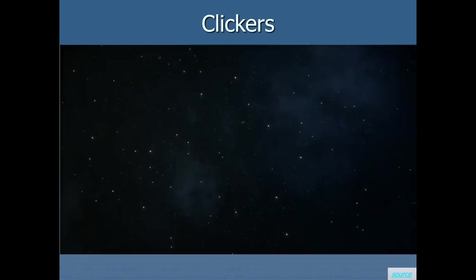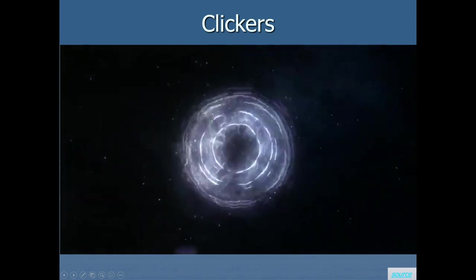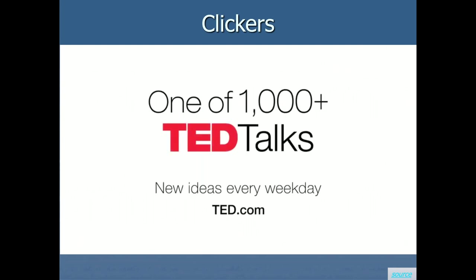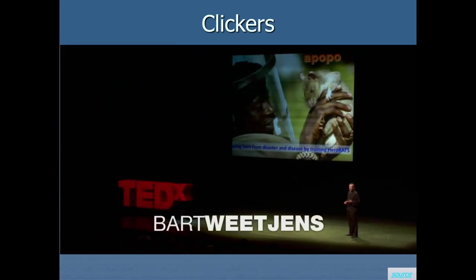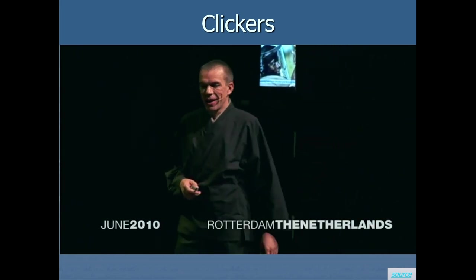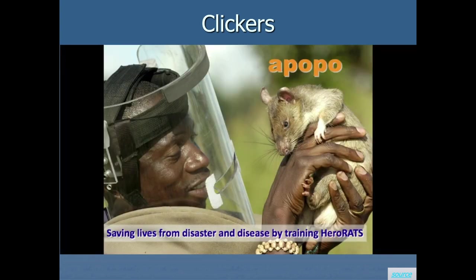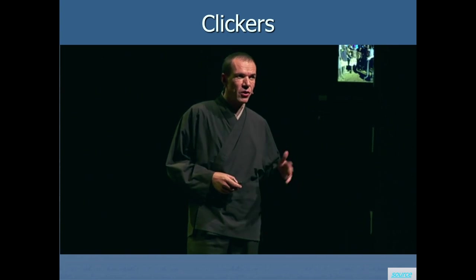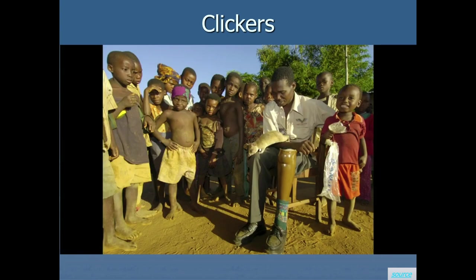Now let's look at some real-world applications where applied behavior analysts have used clicker training to get animals to do impressive things. In this TED Talk, the speaker shares an extraordinary journey that brought him to training rats to save human lives by detecting landmines and tuberculosis. As a child, he had two passions: a passion for rodents — he bred and sold all kinds of rats, mice, hamsters, gerbils, and squirrels — and a passion for Africa, where he learned about diverse cultural backgrounds and dependency on imported knowledge and services.